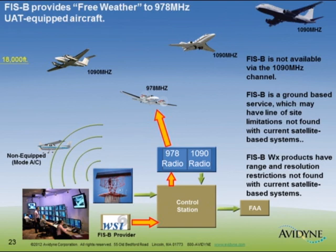Let's talk about FISB — the so-called free weather promised as part of the 978 MHz equipage. You have to have a 978 MHz receiver to get the free weather. FISB is not available on 1090. Remember, this is a ground-based service, which may have line-of-sight issues. These FISB systems typically have range and resolution limitations — they don't want to send out weather for the whole country if you're flying up the East Coast; they're managing bandwidth as well.